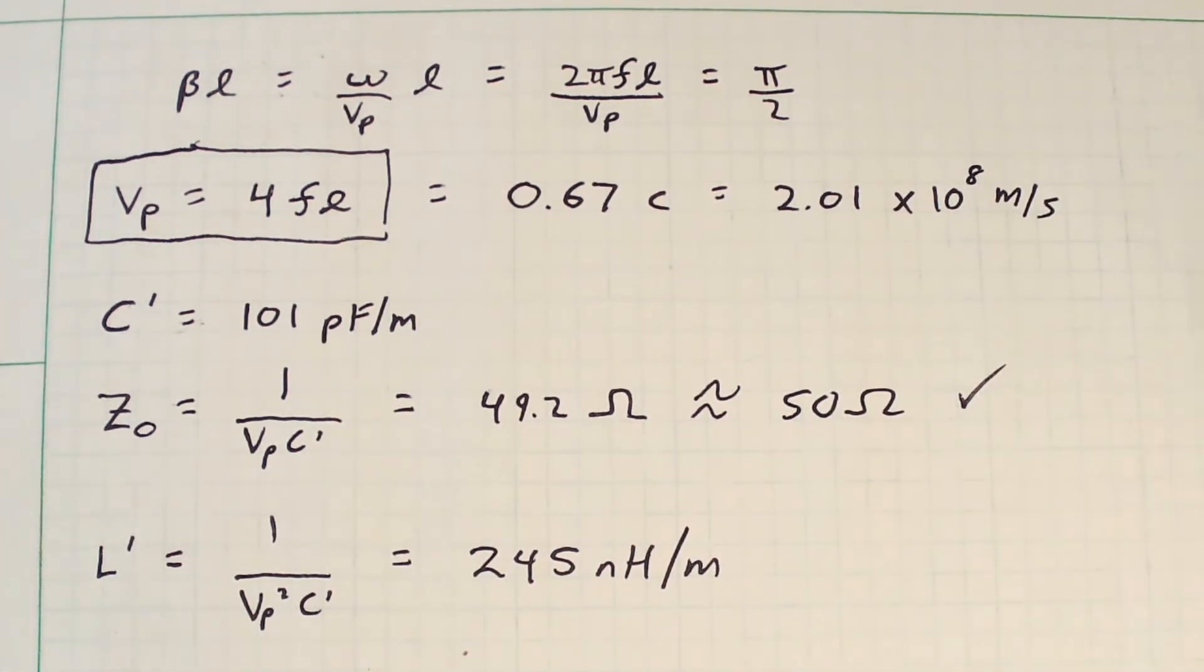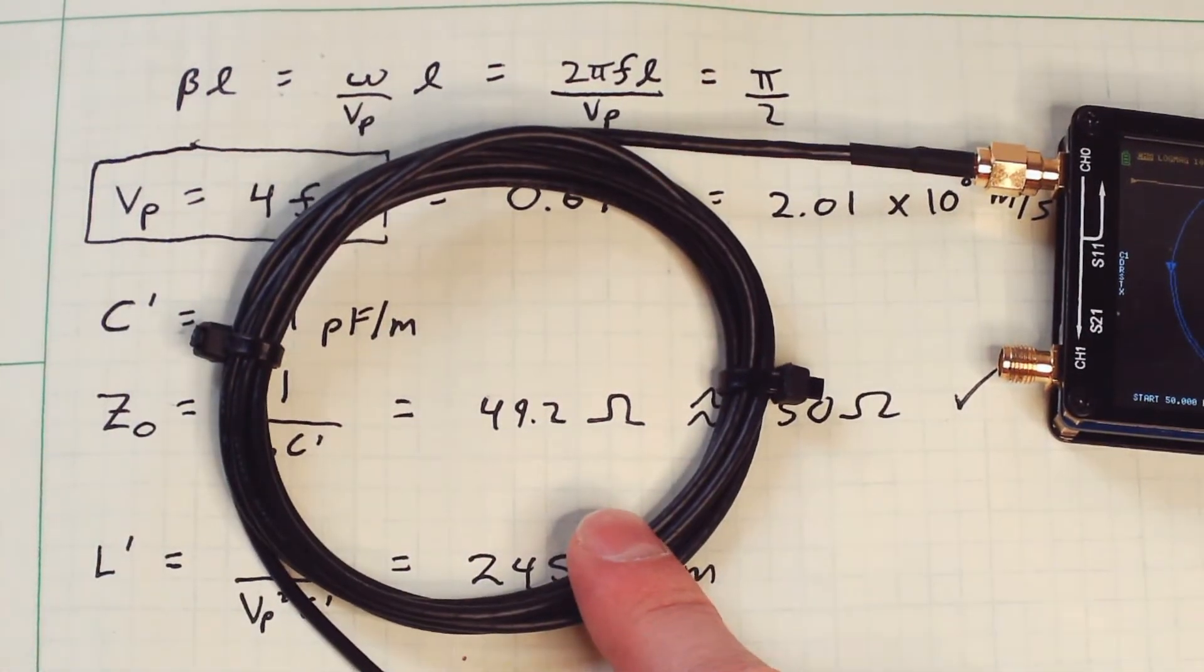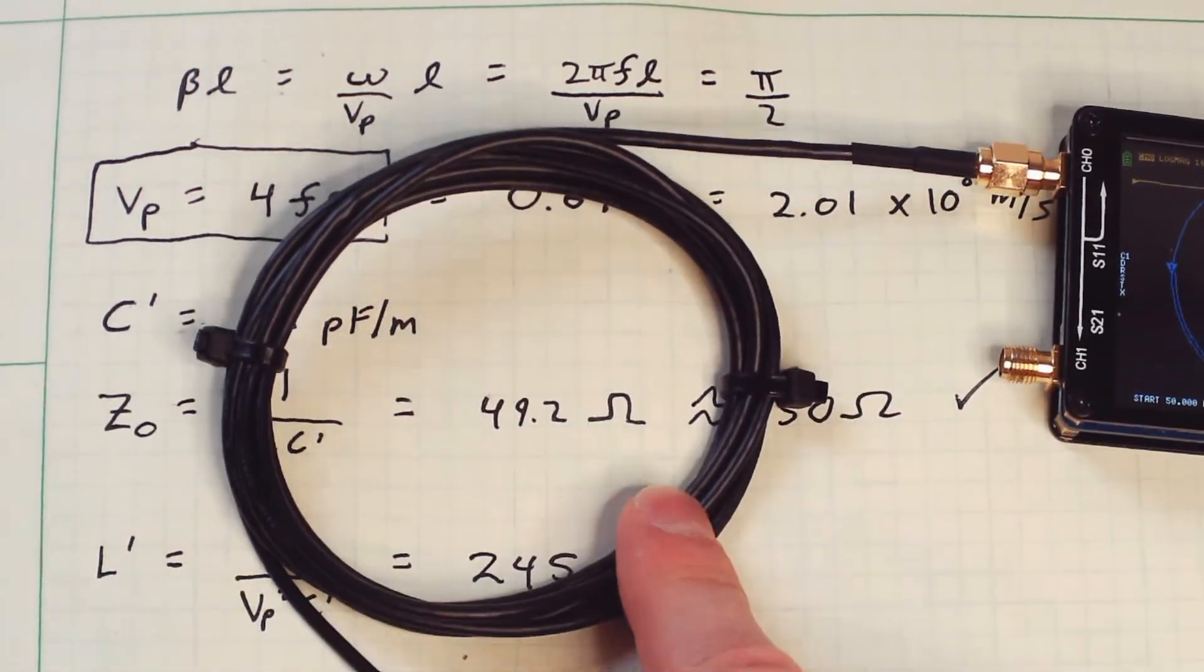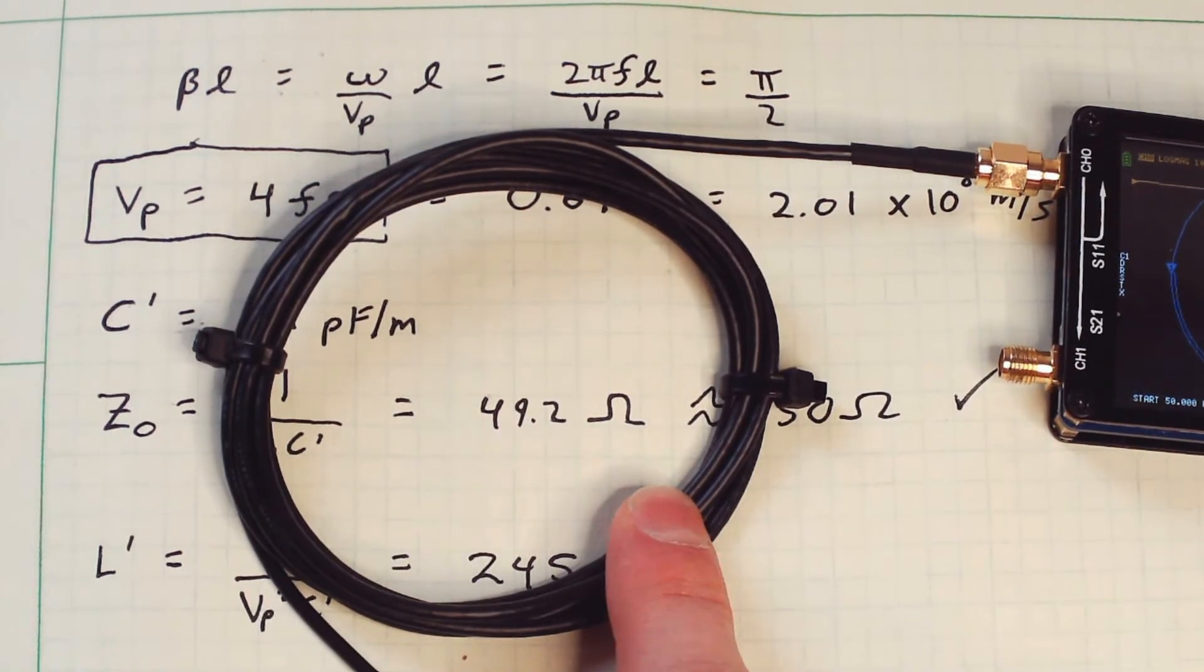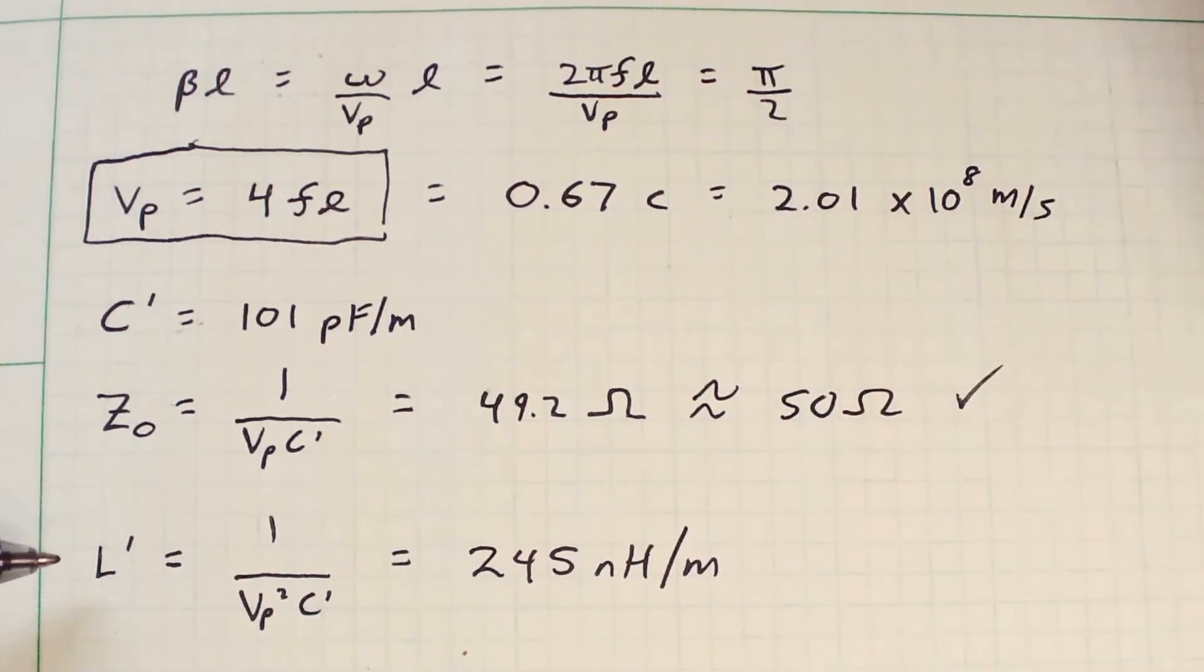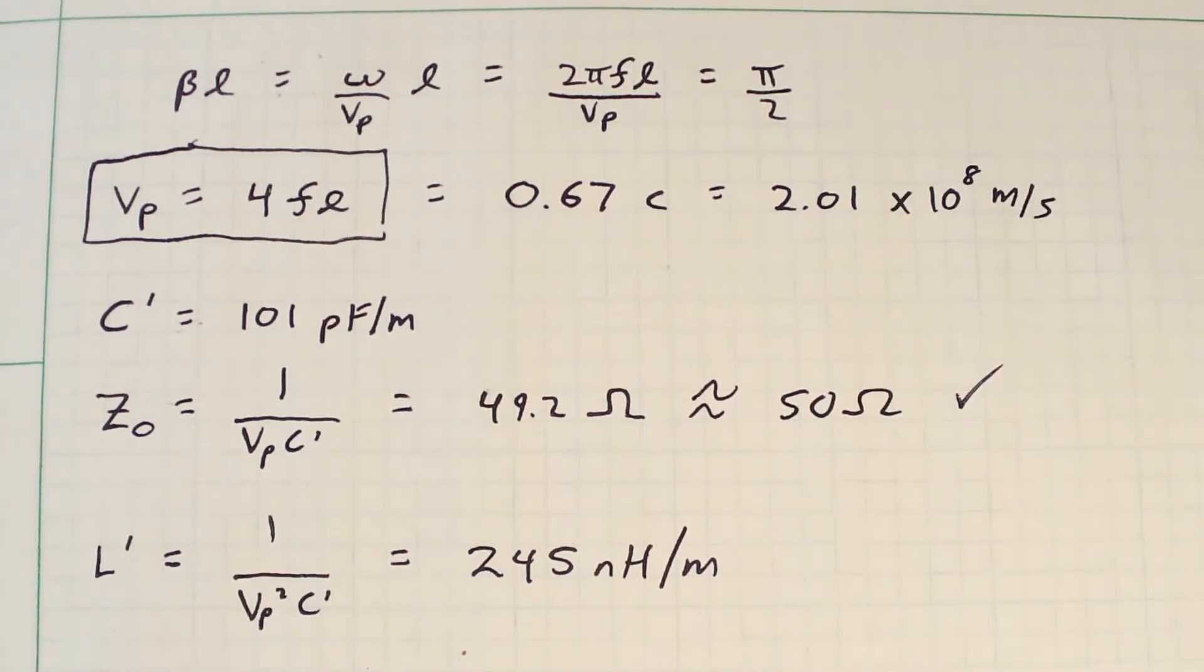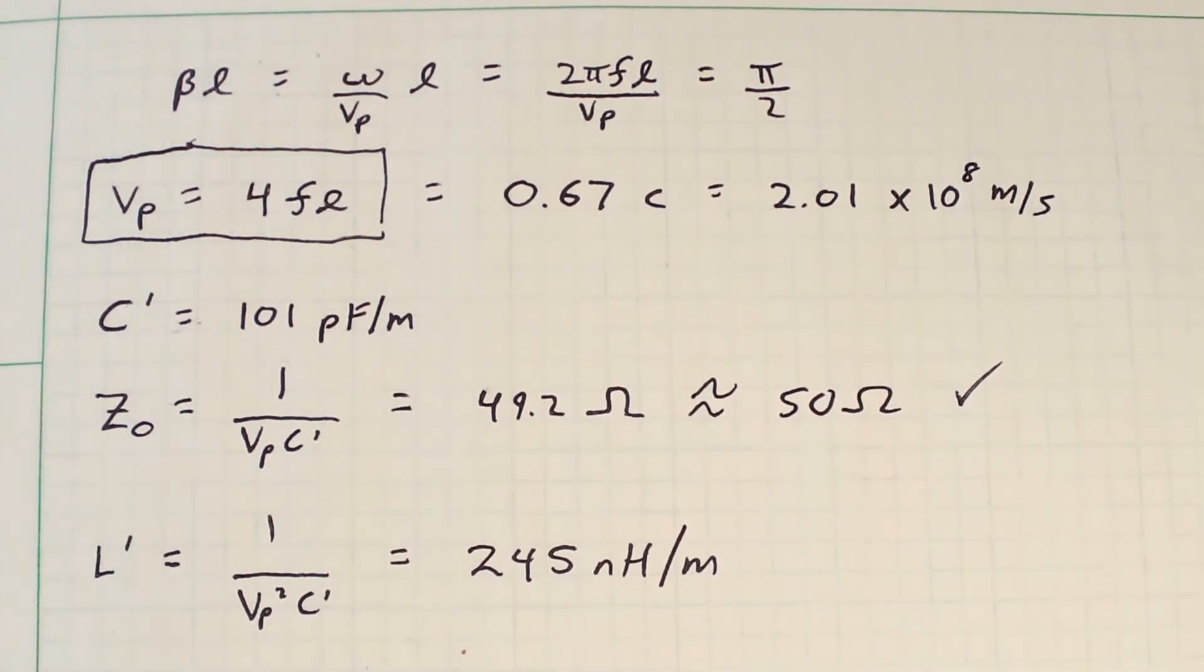So there you go. I now know pretty much everything there is to know about this little length of coaxial cable. I know its impedance, I know the characteristic impedance, I know the phase velocity, I know its characteristic capacitance and I know its characteristic inductance. And all it took was two simple measurements and a little bit of math. So thank you for listening and I hope that's useful for you in your own transmission line work.